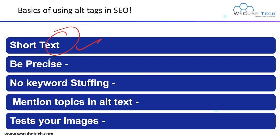Next is be precise. While describing a product for an e-commerce business, the alt text should precisely describe the product within the image so that it shows up with relevant results. Next, no keyword stuffing — keyword stuffing is punishable by Google. Google will penalize you if you are stuffing keywords in your alt text. For example, for a red jacket, writing 'red jacket, red ladies, hoodies, red' uses the word red multiple times — that is keyword stuffing. Use a simple description instead.